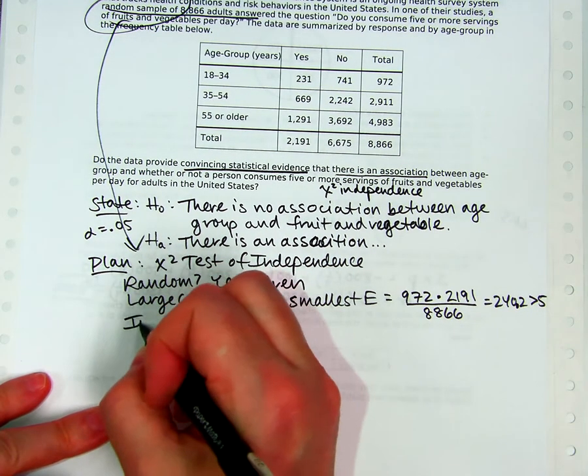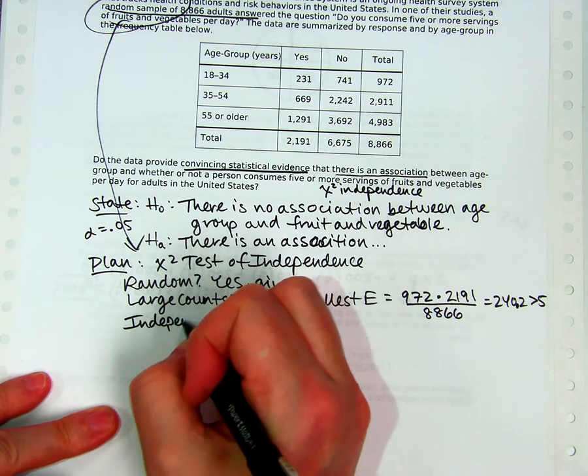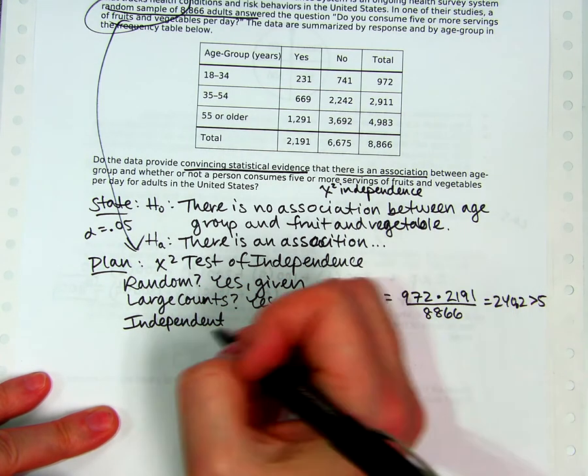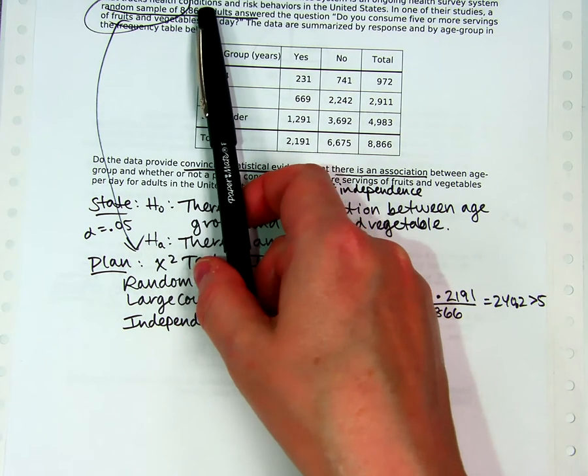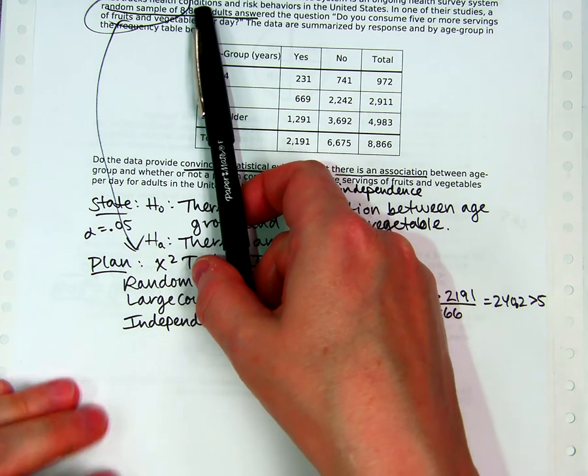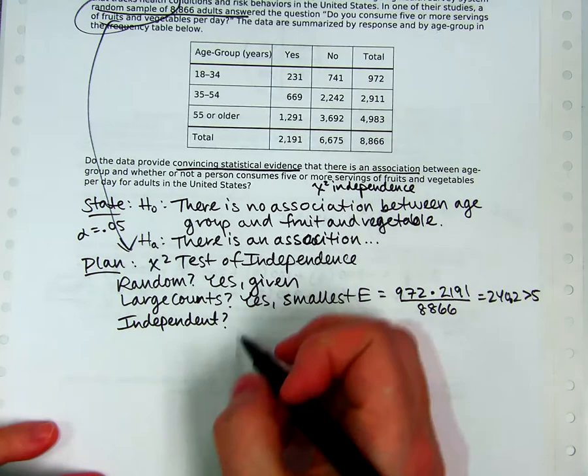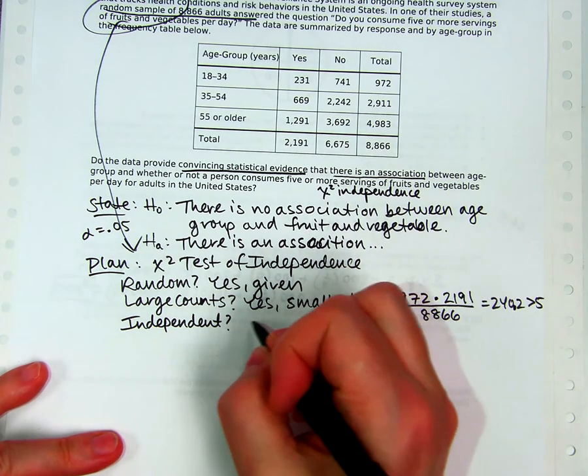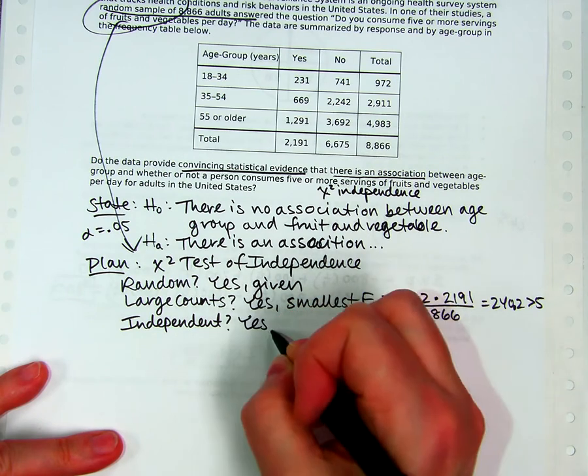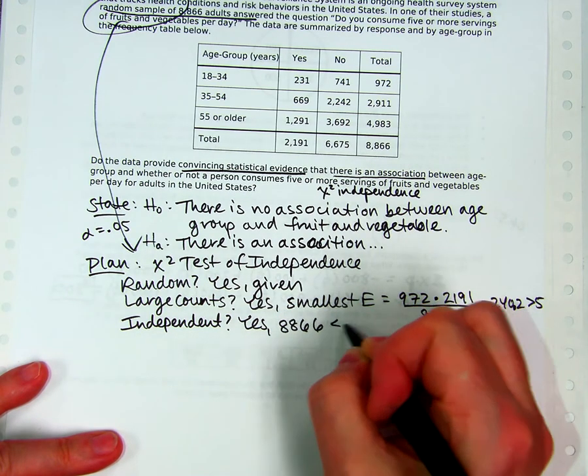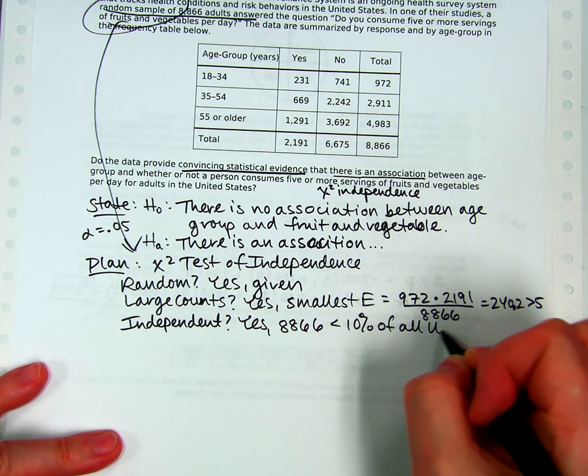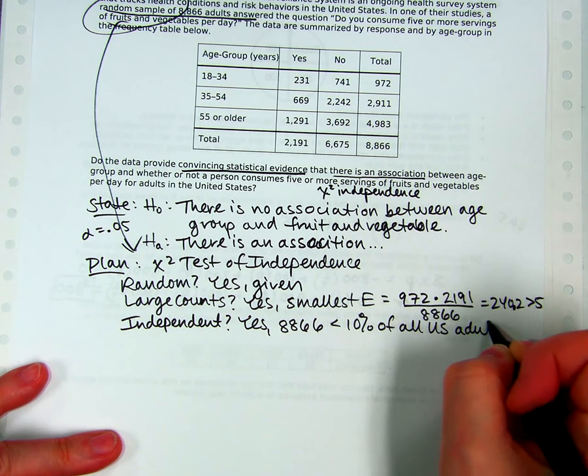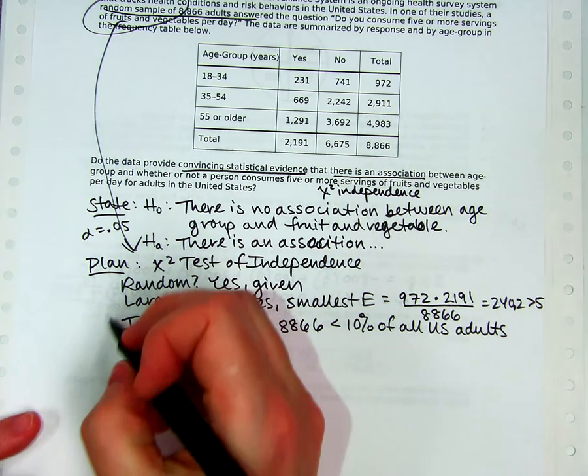And then independence. This always seems weird to me that we're doing a test of independence and yet we have an independent condition. The independent condition is about whether we can take a sample of this size from our population and assume that each one is not changing the probabilities when we draw it. And that's the 10% rule. So yes, 8,866 is definitely less than 10% of all U.S. adults. That's my population. I'm just thinking about my population and is it that big? Yes, of course it is that big.